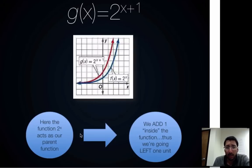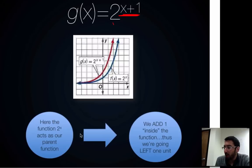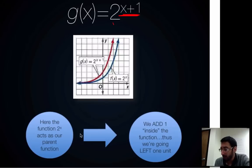Example one: g of x equals 2 to the x plus 1. Our parent function is 2 to the x, where 2 is the base and x is the exponent. We have added 1 directly to our variable within the exponent. Since we are adding 1 inside the parent function, we shift to the left 1 unit. The graph shows the original function and confirms it moved to the left by 1.